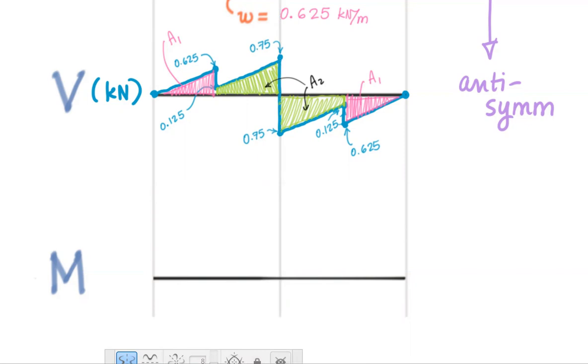I'm going to recognize that when I integrate an anti-symmetric function, I get a symmetric function. Let's do this qualitatively. Turn on my symmetry. Pick out a pretty color. Start at a moment of zero. Increase quadratically, concave up.